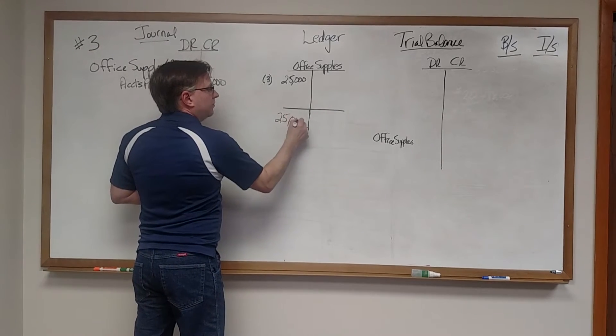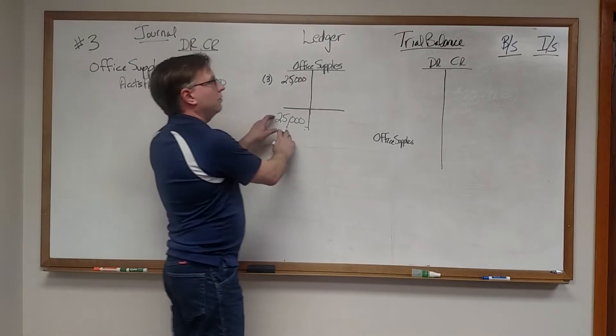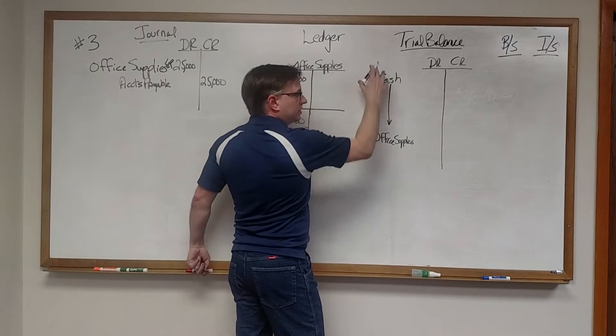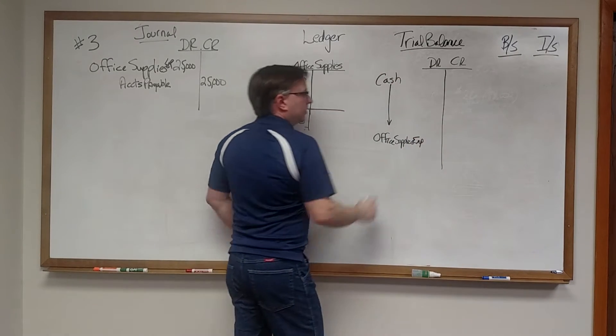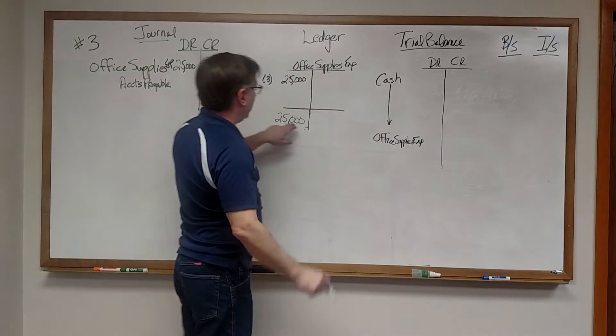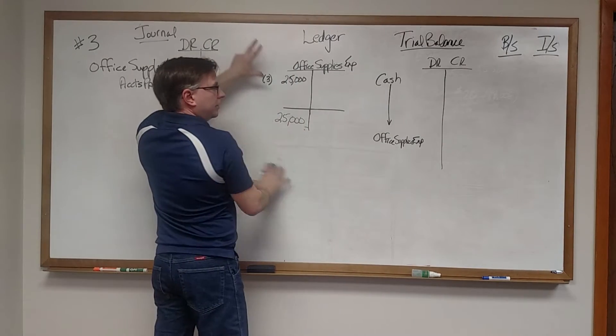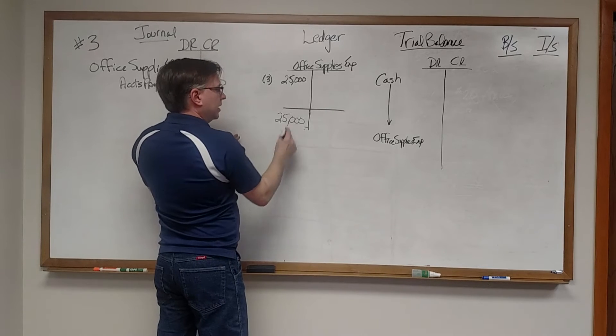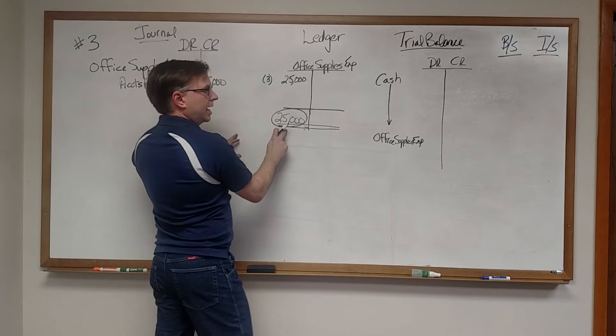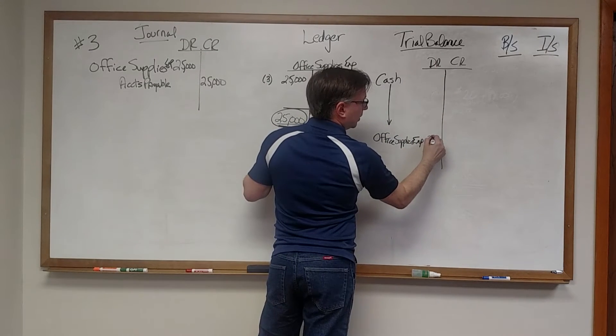So with our $25,000 debit balance that we have on our ledger, we're going to go over to our trial balance. And the trial balance is going to have cash and everything else, plus office supplies expense is going to be listed there. So we look at our office supplies expense ledger, just like we would look at cash and all the other ledger accounts that you've got, and we see that it's a debit for $25,000. So we're going to see the debit column and put $25,000.